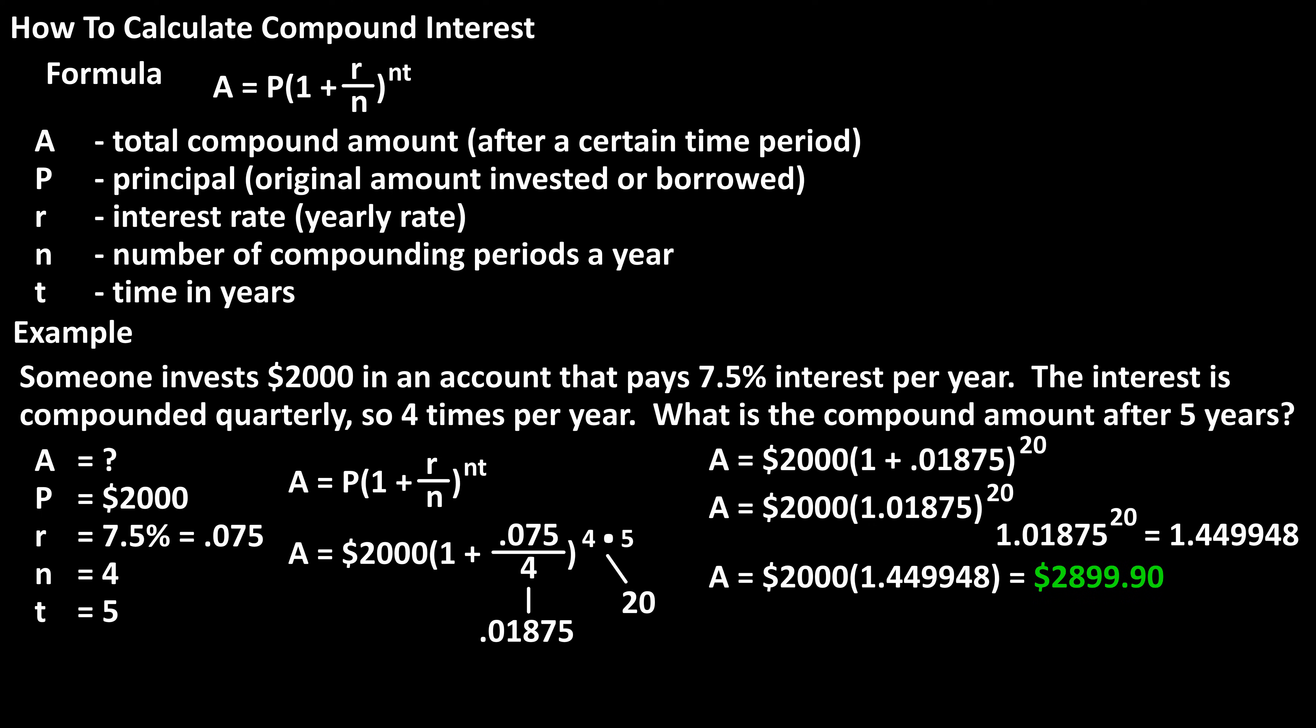And now we have $2,000 times 1.449948, which equals $2,899.90. Round it off. So the total compound amount after five years will be $2,899.90.